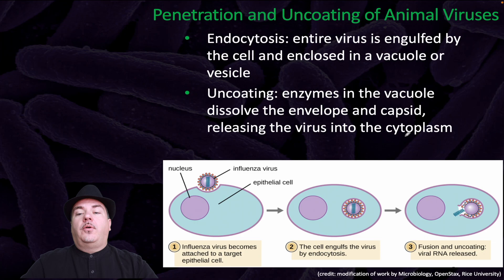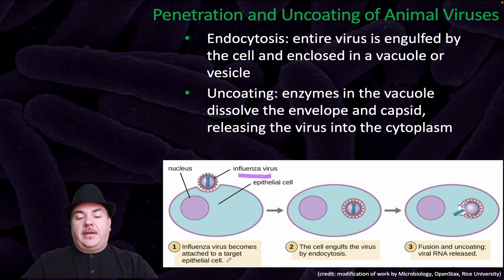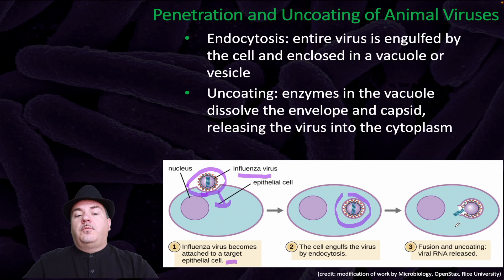Penetration and uncoating of animal viruses: endocytosis is where the entire virus is engulfed by the cell and enclosed in a vacuole or vesicle. Uncoating is where enzymes in the vacuole dissolve the envelope and capsid, releasing the virus into the cytoplasm. For example, the influenza virus is taken in by a target cell through endocytosis, wrapped in the plasma membrane until brought into the cell in a vesicle, and then the nucleic acid is released.